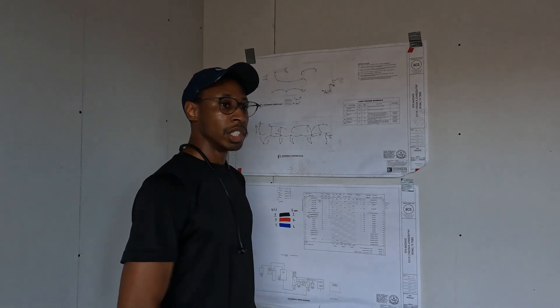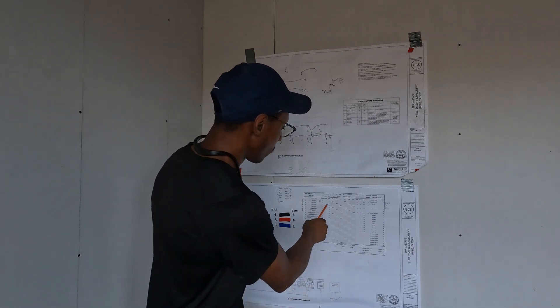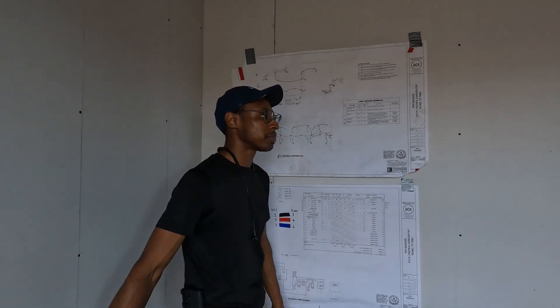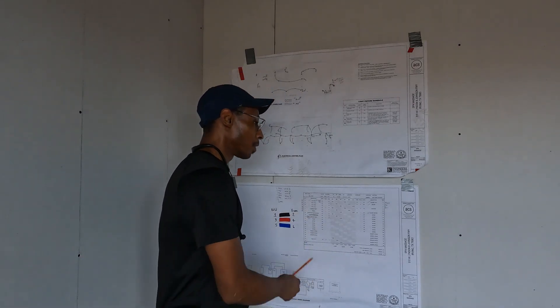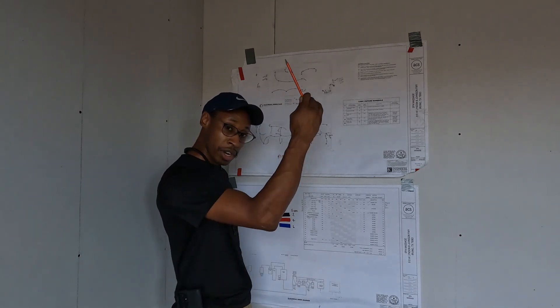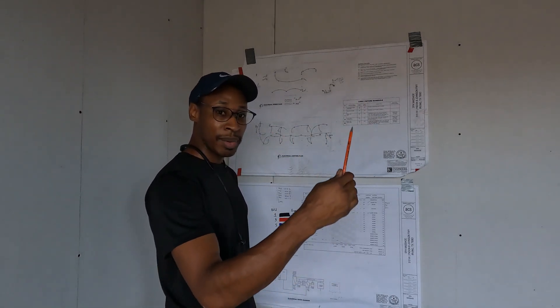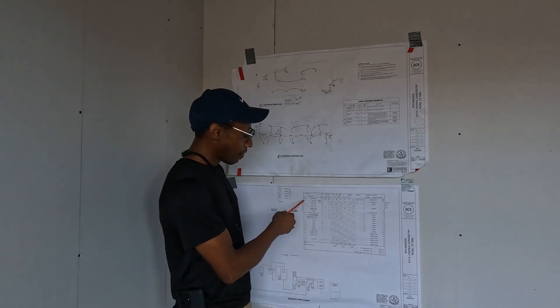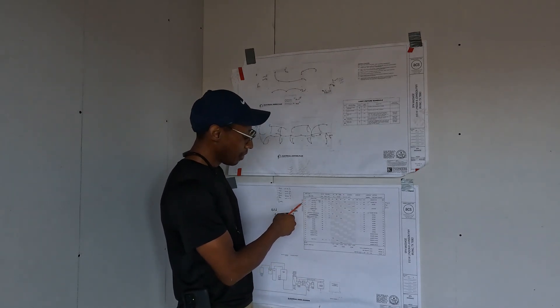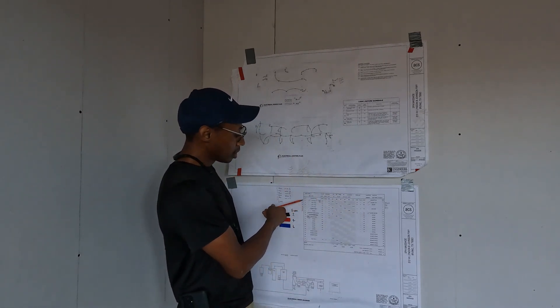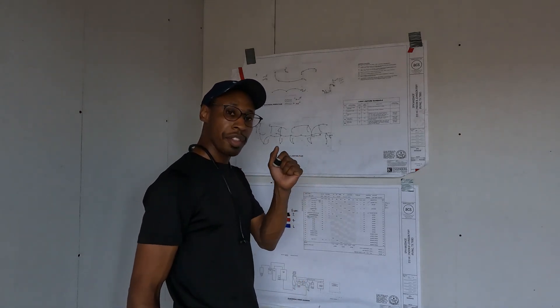If you look inside your electrical panel, you have breakers on the left side and breakers on the right side. Each one of those breakers has an associated number. Starting at the top on the left side, the first breaker is circuit one, below that is circuit three, then circuit five — so you have one, three, five on the odd side.